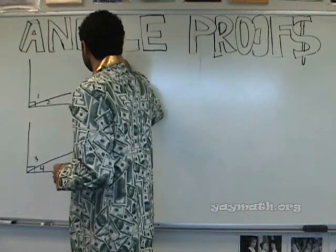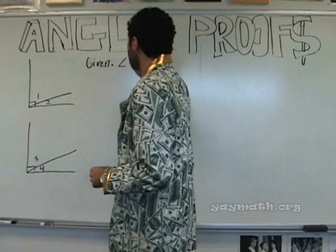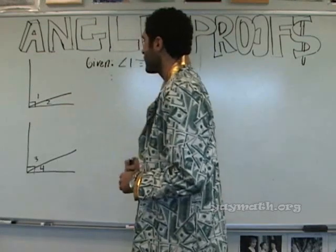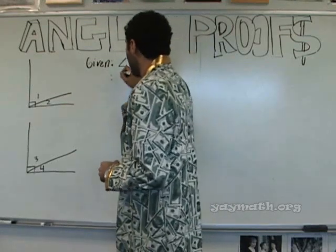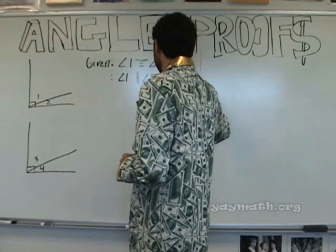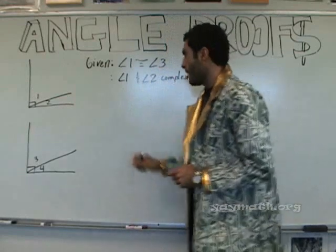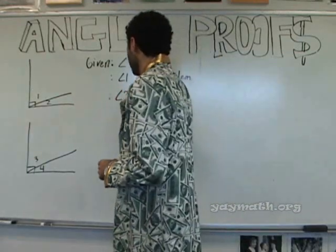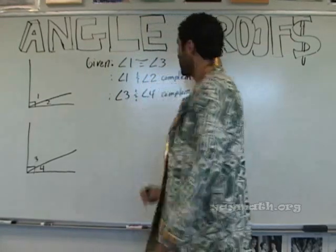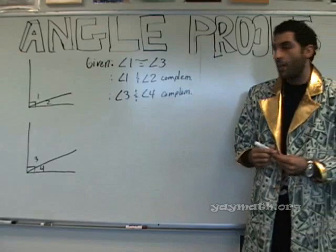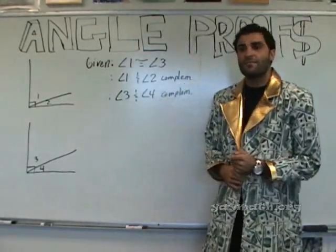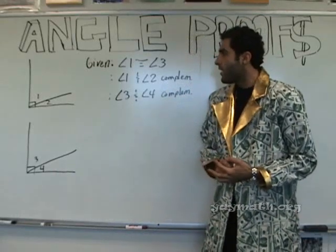We have a given. Angle one is congruent to angle three. Okay, another given. We'll say angle one and angle two are complementary, and we say angle three and angle four are complementary. Sorry? It's obvious. It's obvious? Okay. Well, yeah, the picture is given to help you, but I'm glad it's obvious. It's good.